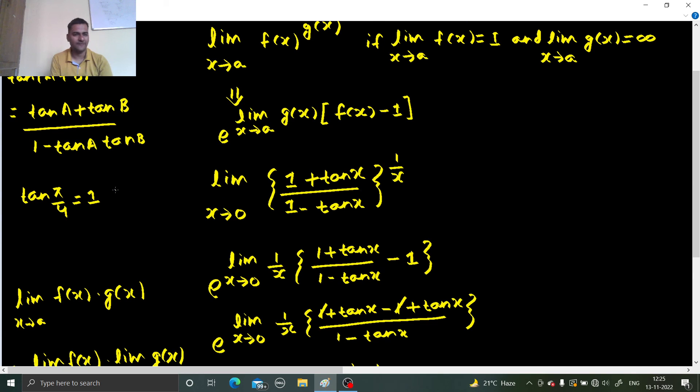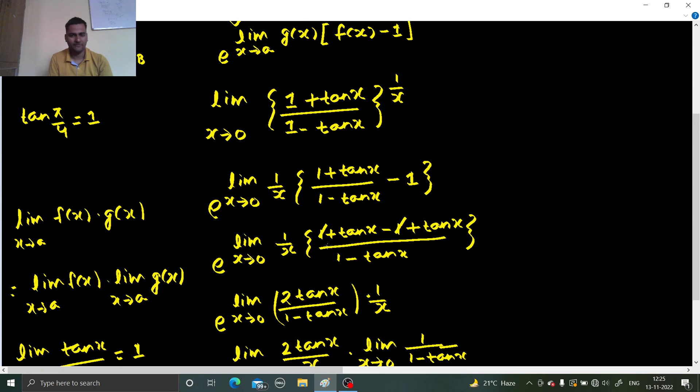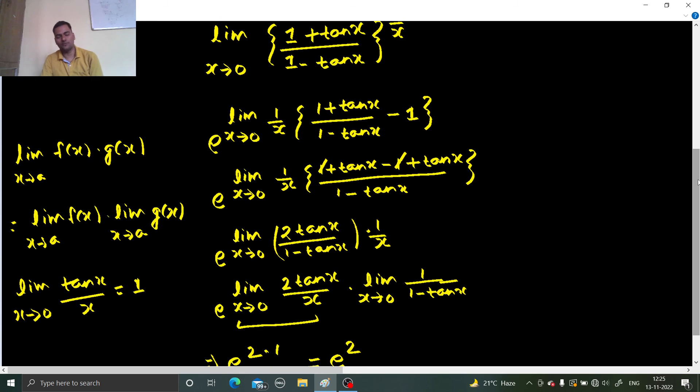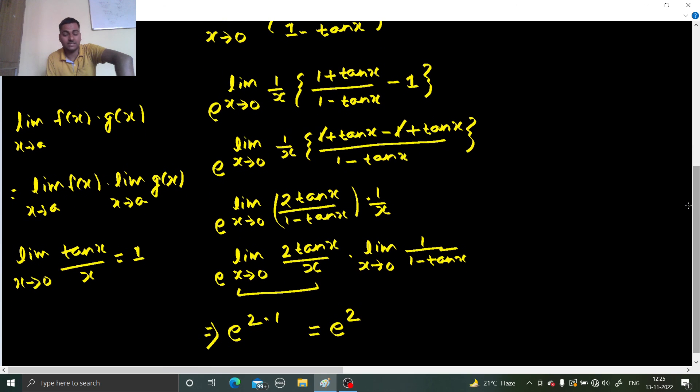Before that we simplified a bit because we know tan(a + b) is tan a plus tan b divided by 1 minus tan a tan b. So tan(π/4) is 1, so 1 plus tan x divided by 1 minus tan x. Now in the next step power which was 1/x that came down and base was subtracted by 1, then we again simplified, 1 got cancelled, we were left with 2 tan x divided by 1 minus tan x. Then we know that limit x tending to 0, tan x by x is 1, so we broke that into product of 2 limits. One limit whose value we directly know and other we can directly substitute x as 0 to get 1, so finally what we were getting was e square.